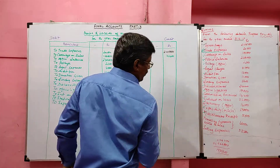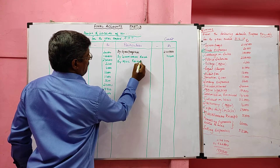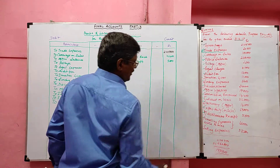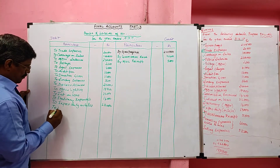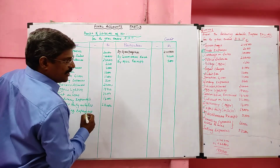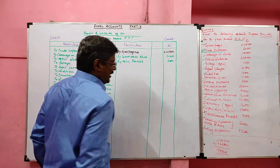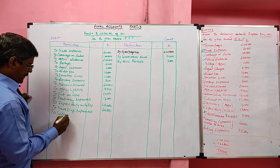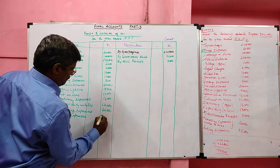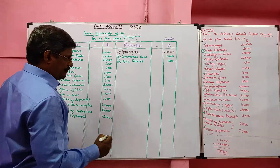Next, miscellaneous or other income is credited to the profit and loss account — miscellaneous receipts value 5,000 rupees. Next, traveling expenses related to sales are debited to the profit and loss account, value 66,000 rupees. Next, selling expenses are debited to the profit and loss account, value 53,200 rupees.